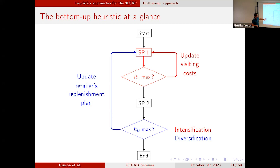We diversify the search by changing the retailer's replenishment plan, since this is the first decision we make at the retailer level.